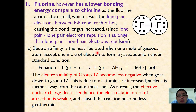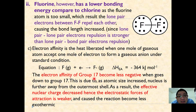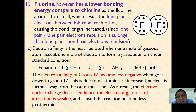Electron affinity is the heat liberated when one mole of gaseous atoms accepts one mole of electrons to form gaseous anions under standard conditions. For example: F(g) + e⁻ → F⁻(g). Electron affinity becomes less negative going down group 17 due to decreasing effective nuclear charge, as electrostatic forces become weaker. Therefore, less heat is released going from fluorine down to iodine.